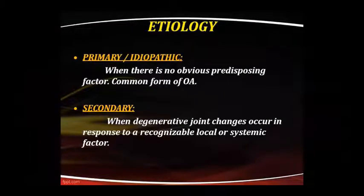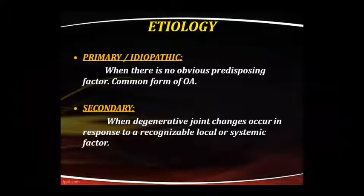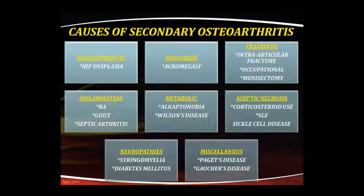Regarding etiology, there are two types: primary and secondary. Primary is idiopathic because there is no obvious predisposing factor — we don't know exactly why it occurs, but this is the common form. Secondary OA is when degenerative joint changes are recognized as a response to a local or systemic factor.